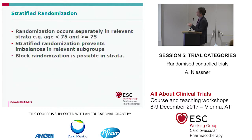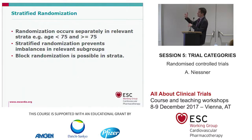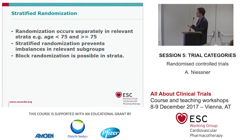Stratified randomization means the randomization occurs separately in relevant strata, for example, age below or above 75 years. It's important to use blocks within this randomization because the groups are usually small within the strata. It's good to combine stratified randomization with block randomization, as it prevents imbalances in relevant subgroups.